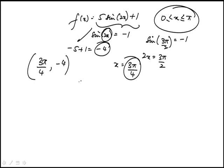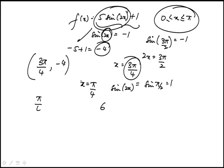The maxima would be when x is π/4, because in that case sin(2x) would be sin(π/2), which is 1. And the maximum value would be 5 plus 1, which is 6. So the maxima is at (π/4, 6).